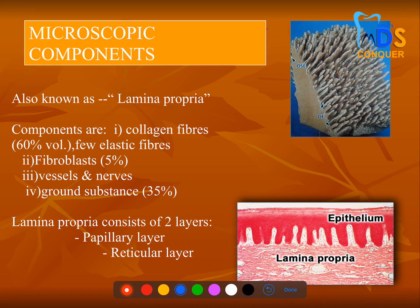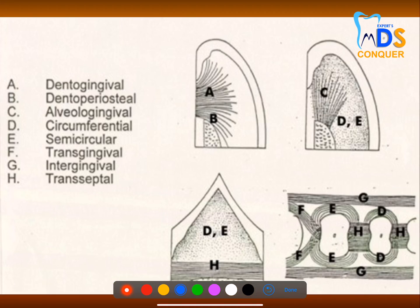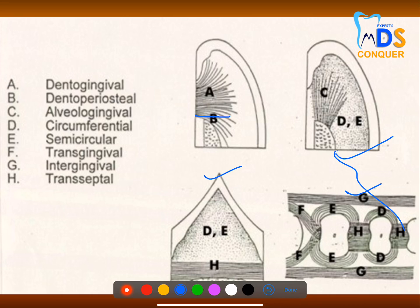The connective tissue is also called lamina propria, and it has a papillary part and a reticular part. It contains cells and fibers. The major fiber groups are: dento-gingival (tooth to gingiva), alveolo-gingival (bone to gingiva), circular fibers, dento-periosteal (tooth to periosteum), and transeptal fibers (from one tooth septum to the other).